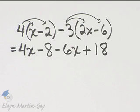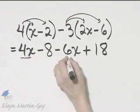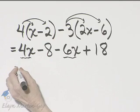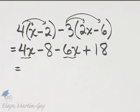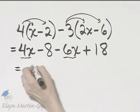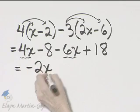And now can we simplify? Do we have any like terms? The answer is yes. These two terms are like terms, so let's combine them. 4x minus 6x, that's 4 minus 6, which is negative 2, and then x.